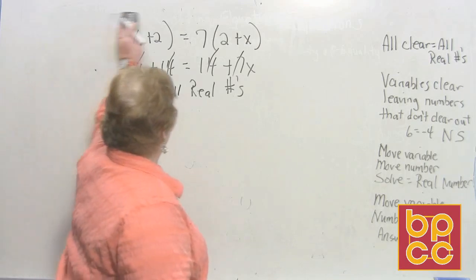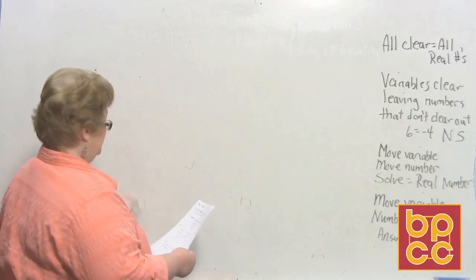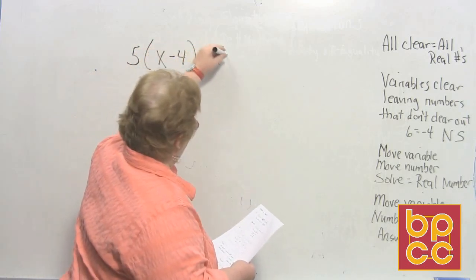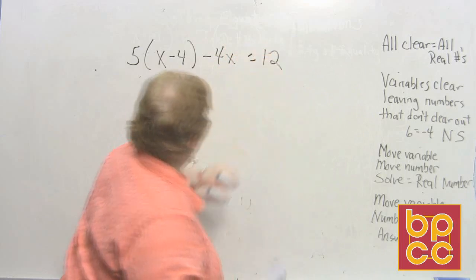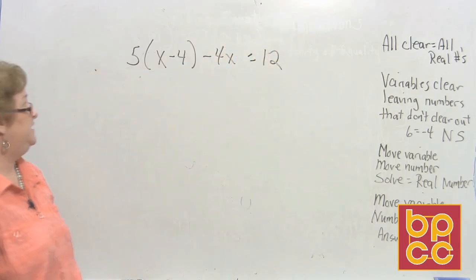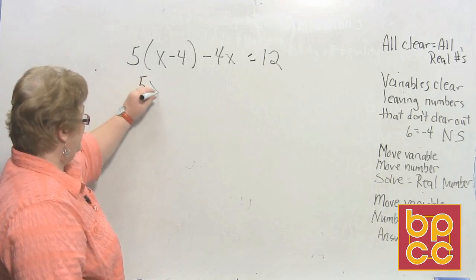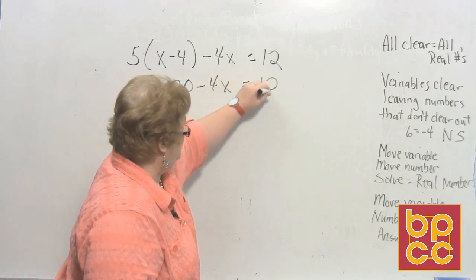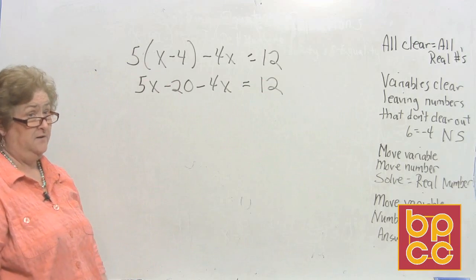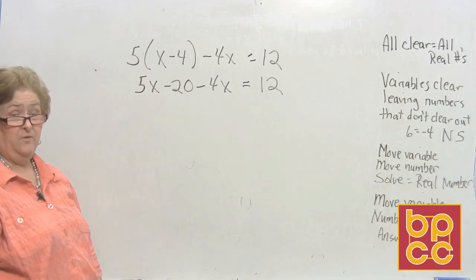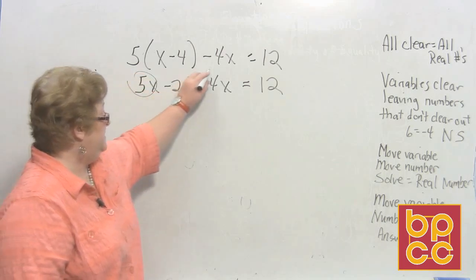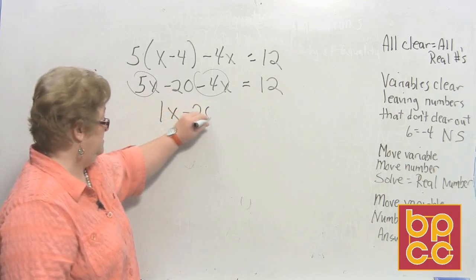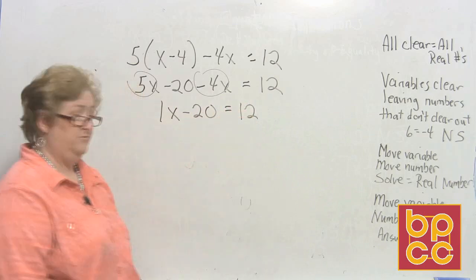Let's try another one. This time we have 5(x − 4) − 4x = 12. Let's distribute first and then see what we need to do. We get 5x − 20 − 4x = 12. We have to do some combining before we move any numbers.